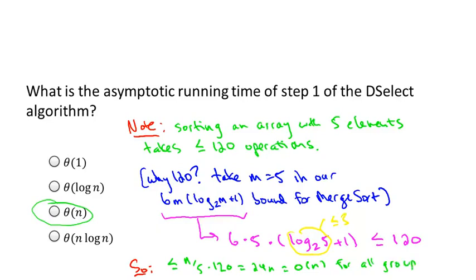To be pedantic: we do at most 120 operations per group, there are n/5 different groups, and multiplying those gives 24n operations to do all the sorting. That's obviously O(n). So step one takes linear time.